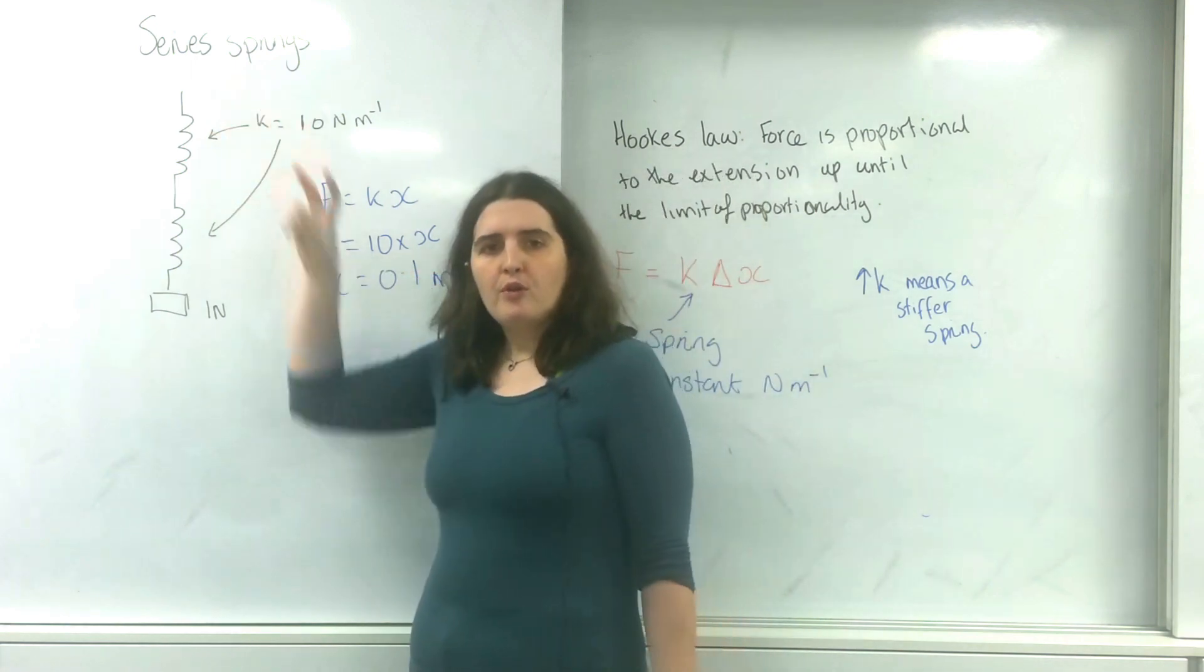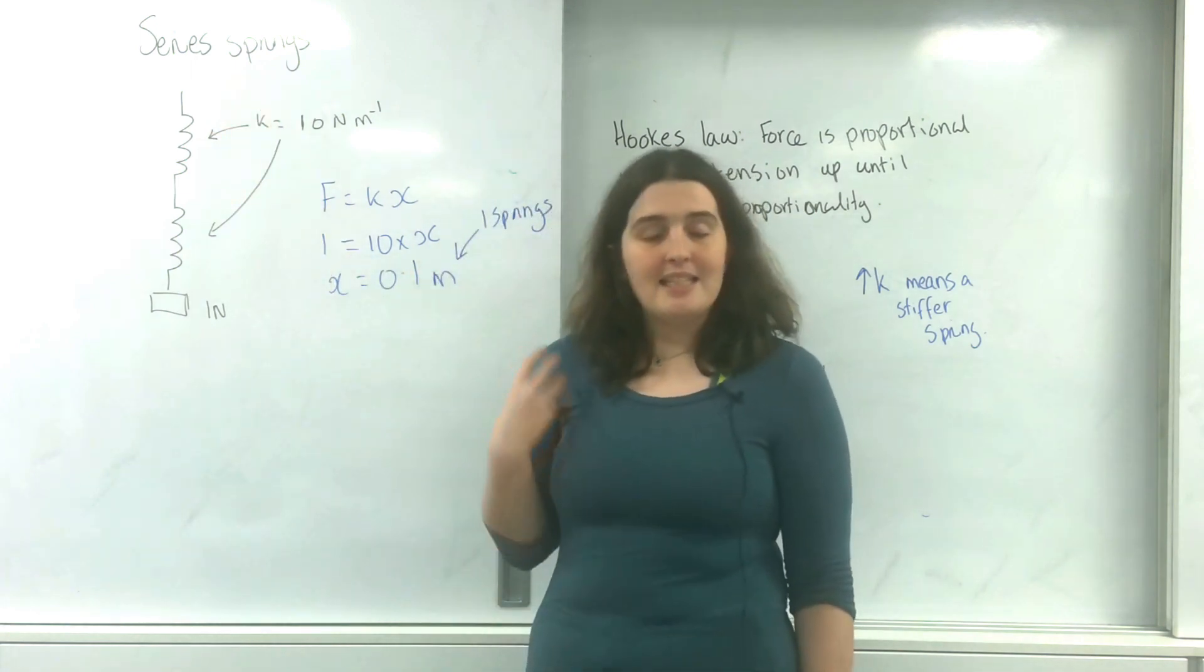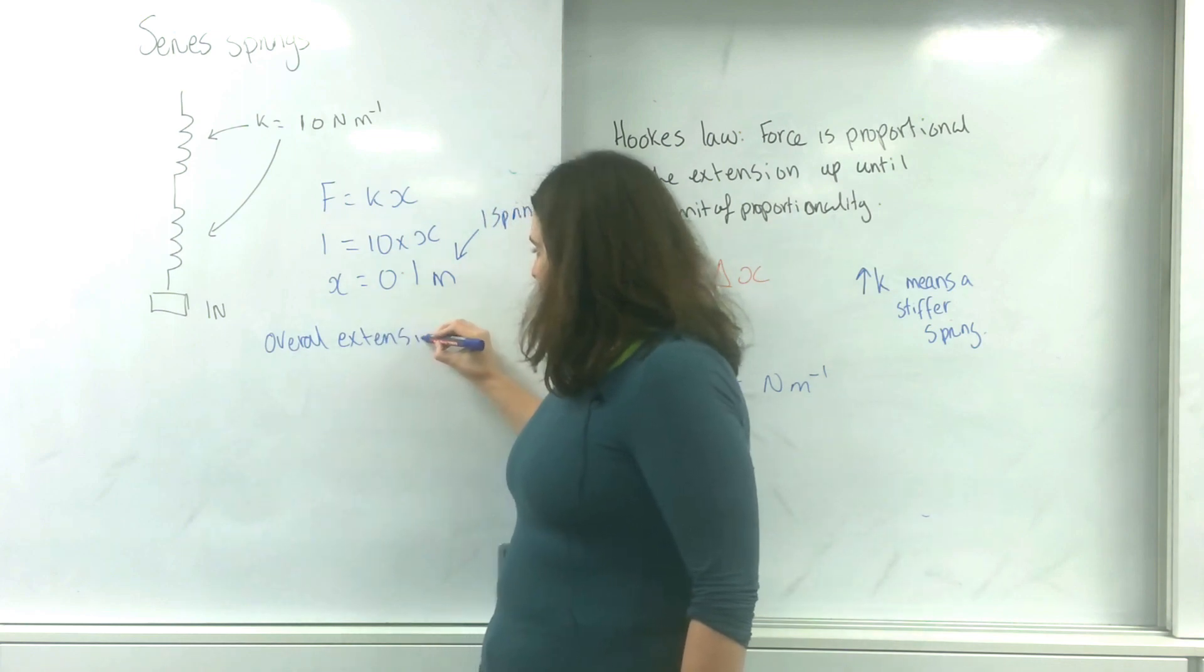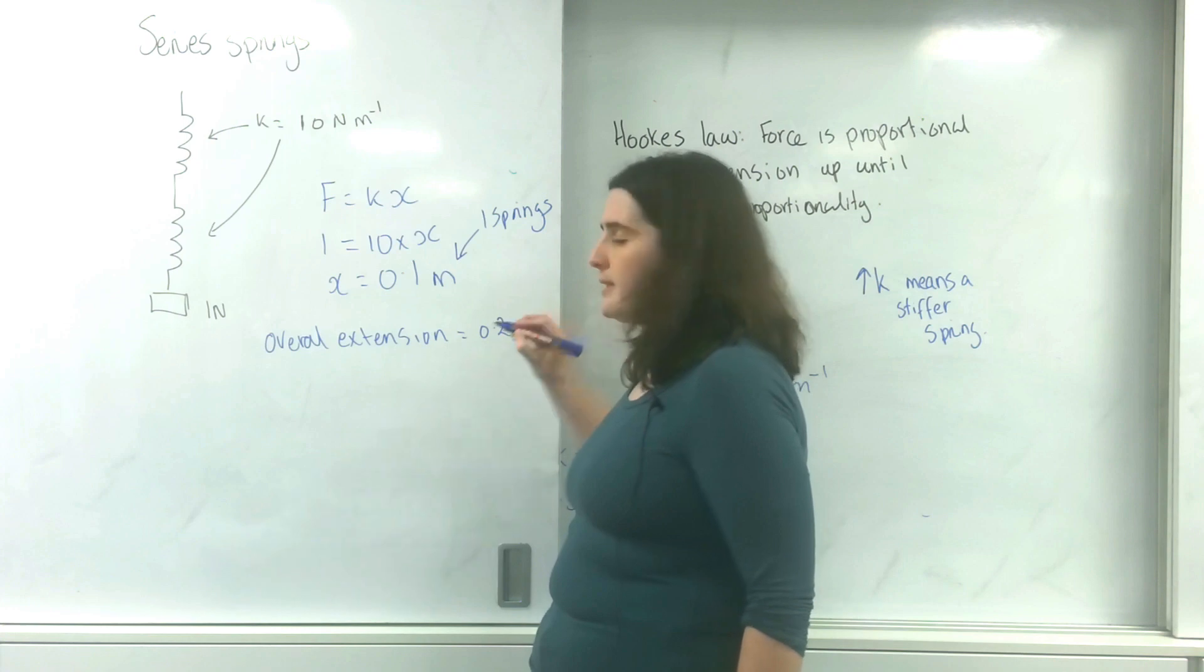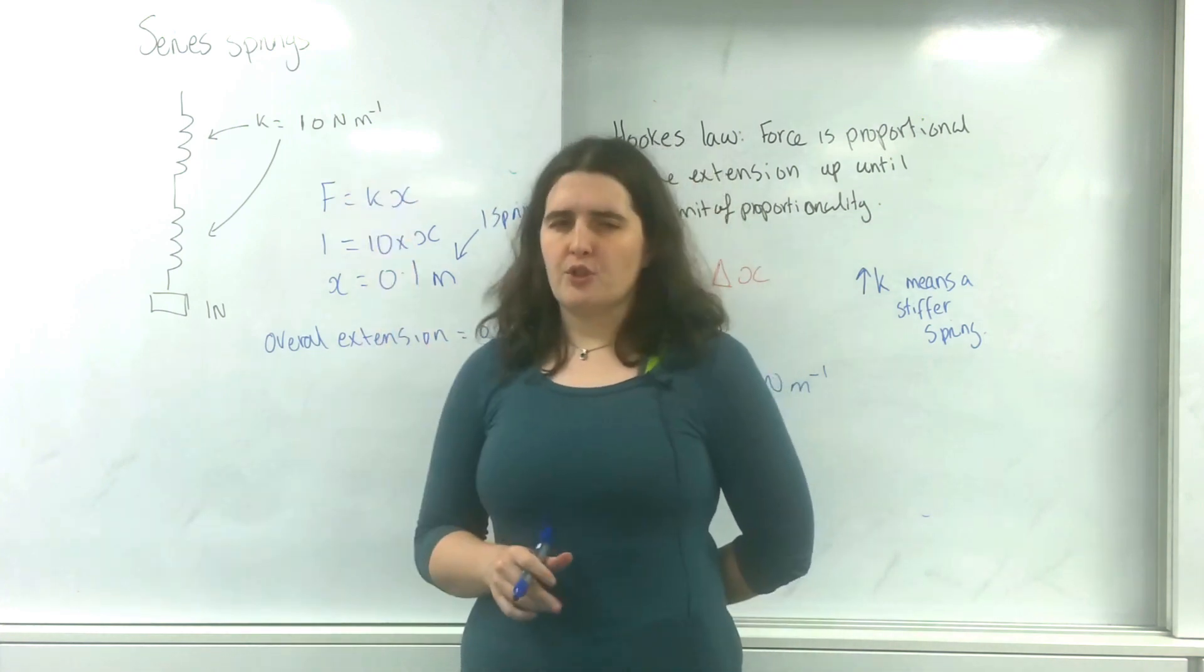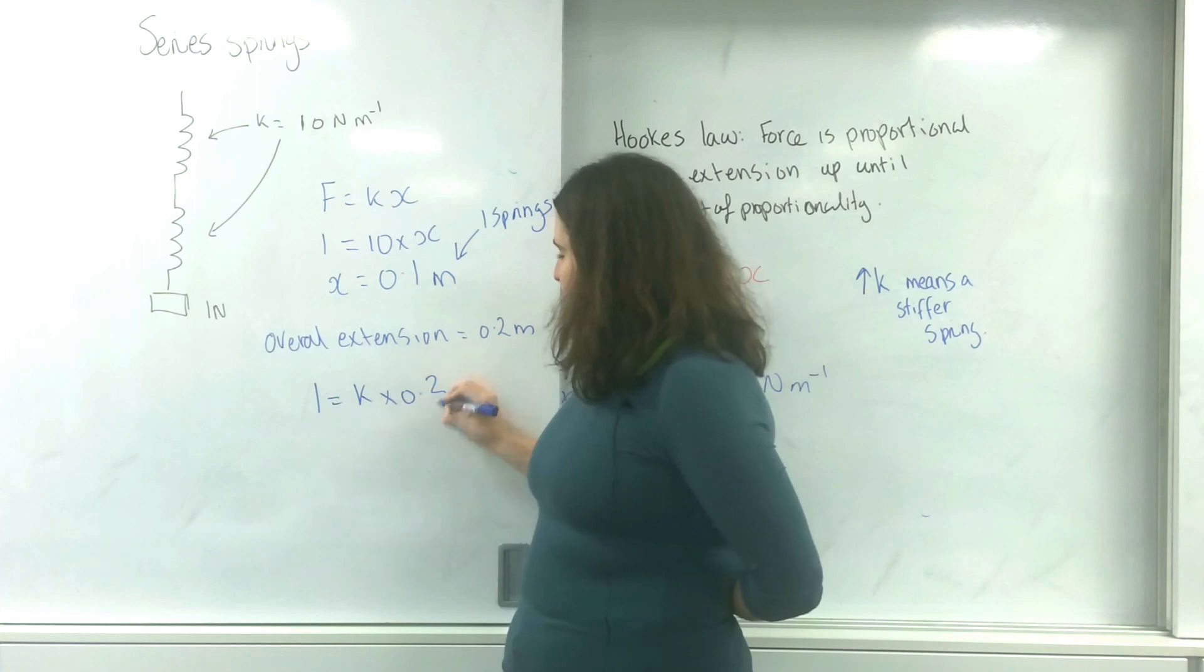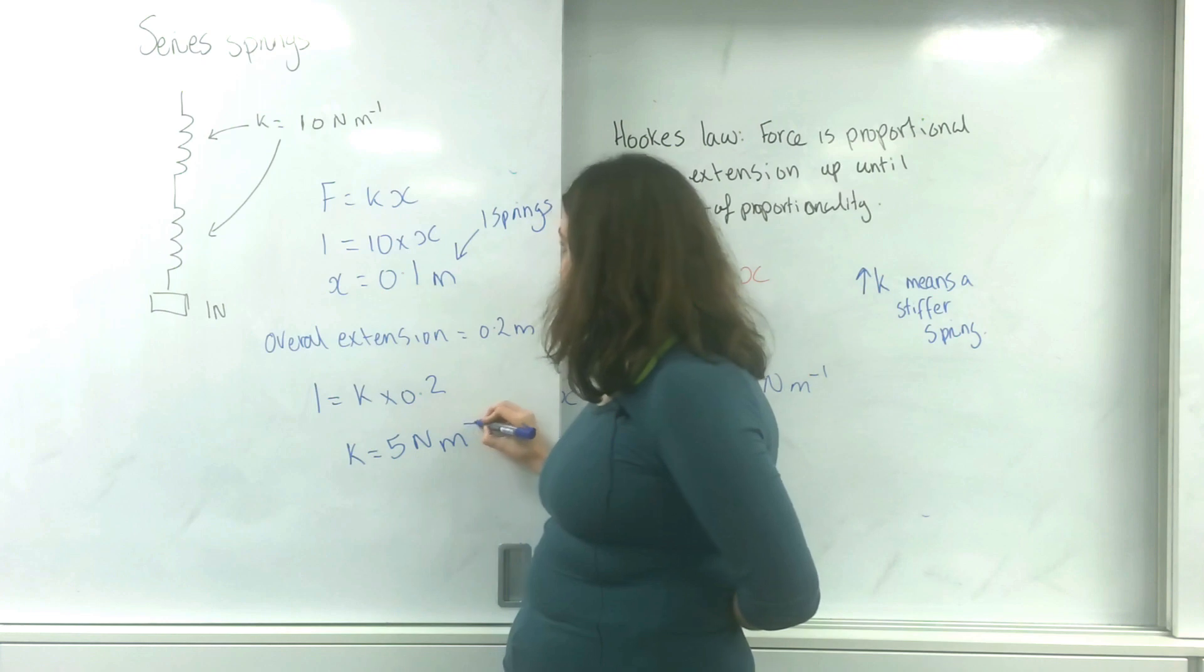They are both going to extend 0.1 metres. This means overall the extension is 0.2 metres. So if I'm going to find out the overall spring constant for this system, 1 equals K times 0.2. So K equals 5 newtons per metre.